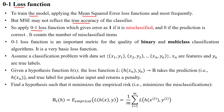The zero-one loss function gives accuracy with respect to classification problem statements. It returns one whenever data is misclassified and zero whenever the predicted value and actual value are the same. So if correct classification occurs it gives zero; if there is misclassification it gives one. This can be used to count the number of misclassified items — for example, if you get three ones, the number of misclassified samples is three.